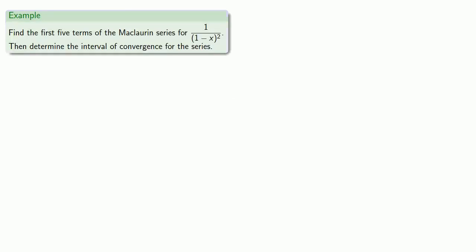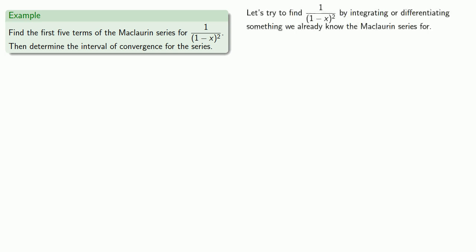For example, let's find the first five terms of the Maclaurin series for 1 over 1 minus x squared, and then determine the interval of convergence. Rather than going through endless differentiation, let's try to find 1 over 1 minus x squared by integrating or differentiating something whose Maclaurin series we already know. Fortunately, as good calculus students, we know the Maclaurin series for several important functions.